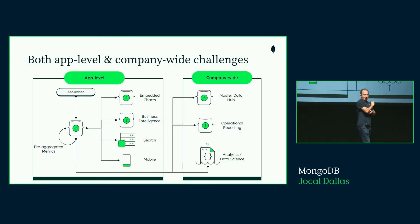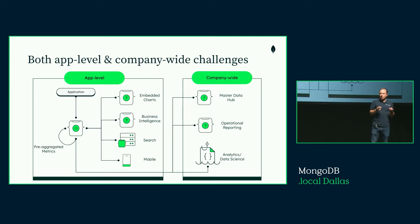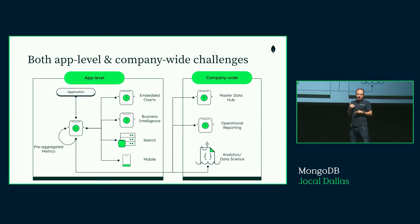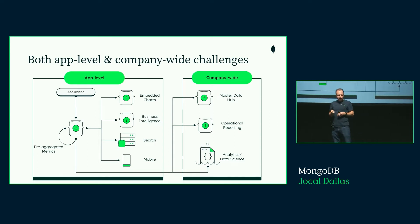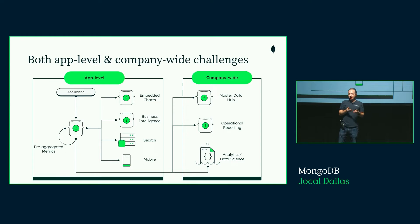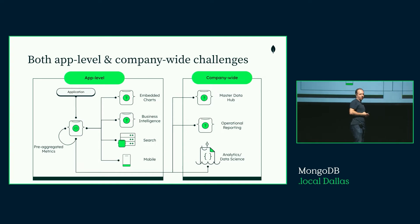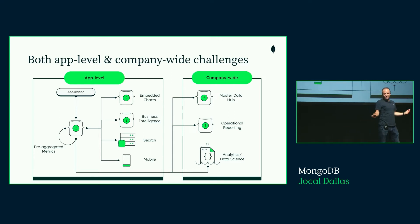Looking at challenges today: within an application team, you might have multiple workloads to satisfy — your application database, embedded charts or in-app analytics, business intelligence and reporting, search, and mobile. Your end-to-end data life cycle is more than just that — your data also goes into company-wide reporting. It was easy for me to put all of this on one chart, but there's a lot behind each of those arrows.